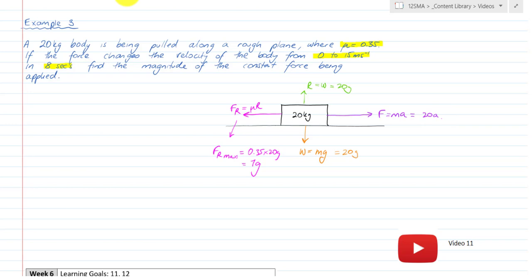We can set up our overall resultant force. We know it has no j component, so let's just look at the i component. The resultant force F equals 20A minus 7g.